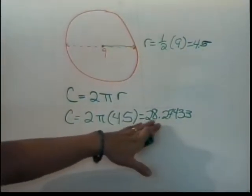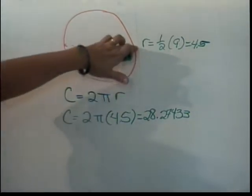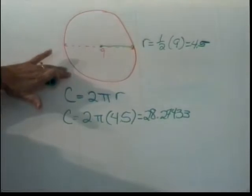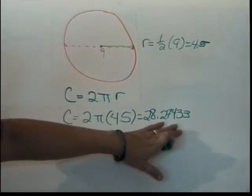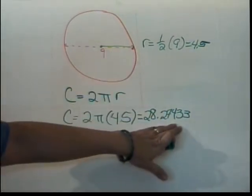So that's how many, now this is not square units, because remember, this would be just how far you would walk if you walked around the outside of the circle. So we walk about 28.27433 units. If this were in inches, then these would be inches that we'd be walking. It'd be a very short walk.